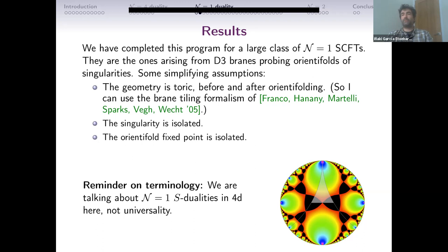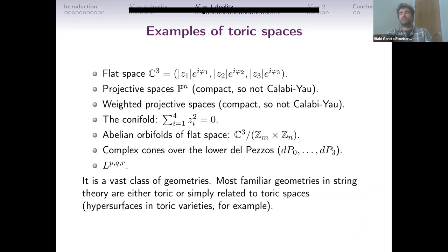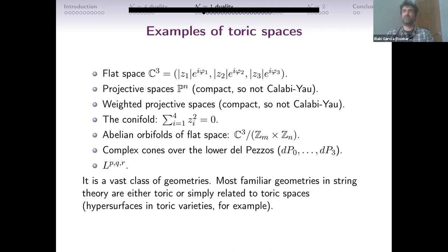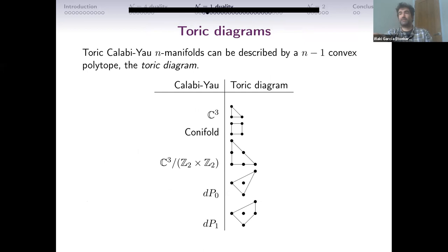We are working with N=1 conformal manifolds, moving in the conformal manifold to understand what happens at different coupling limits. There are many toric spaces — flat space itself, orbifold spaces, non-compact toric Calabi-Yau spaces. A famous example is the conifold. You can also have orbifolds of flat space, del Pezzo surfaces, L^{p,q,r} spaces, and so on. Whenever you have a convex polytope in ℤ² that gives rise to a geometry, you get an infinite class of examples.